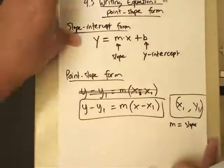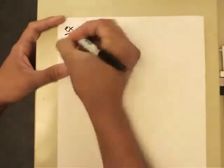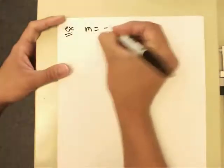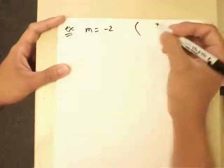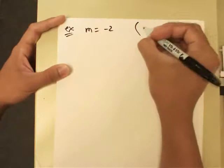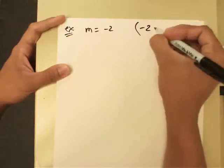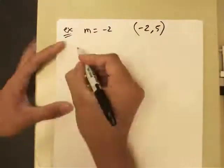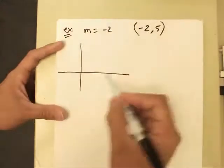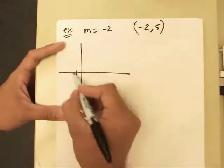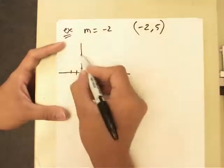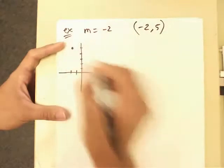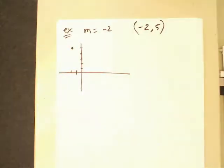So just take a look here at our first example. Pretend I already give you a slope of negative 2, and I give you a specific point for this line. So this is (-2, 5). If I was to graph this, I just want to quickly show you. Negative 2, 5 is right here.